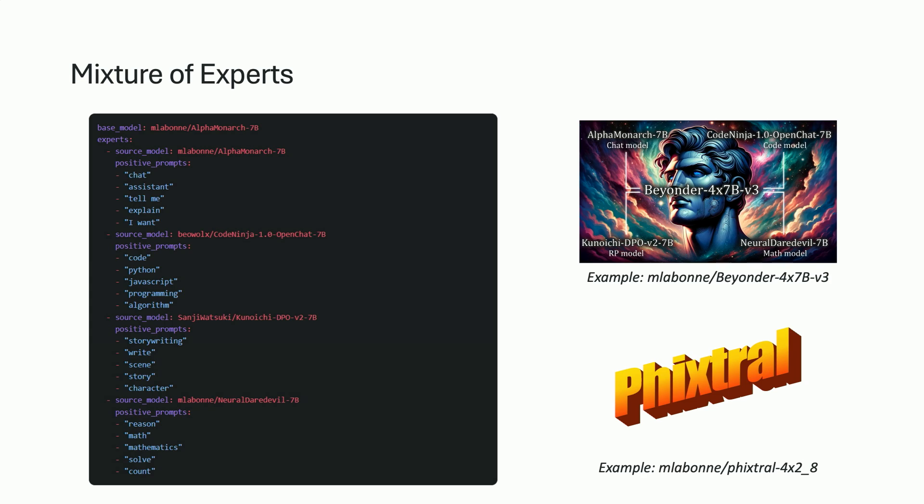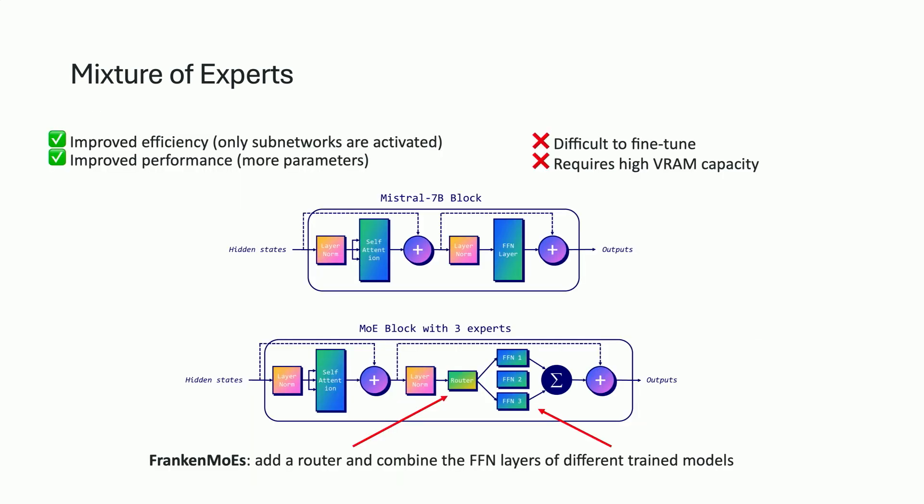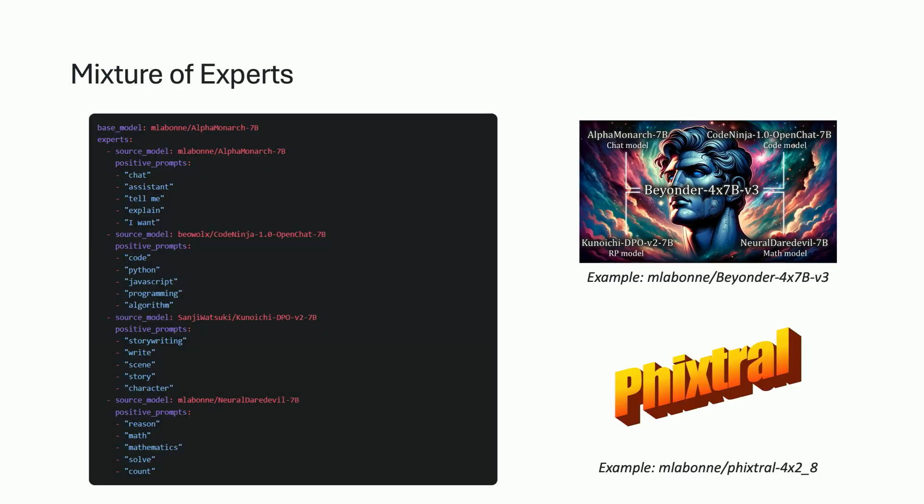On the left you can see a MergeKit config for the Beyonder model. For this model, I selected four different fine-tuned models — one as a chat model, one as a code model, one as a role-play model, and one as a math model — and I'm using positive prompts to initialize the router. The router is supposed to select, for each token and each layer, which feed-forward network layer is going to be used — typically two. So we calculate the embeddings from these positive prompts and use them to initialize the routers. That works really well. For Mixtral I had to modify it to make it compatible, and it outperformed the base model on a lot of tasks.